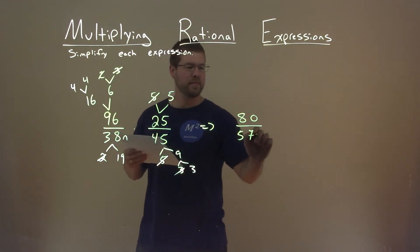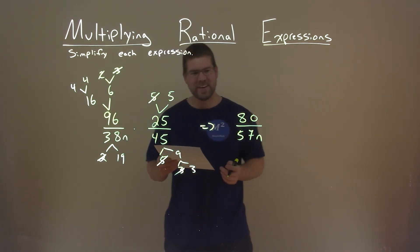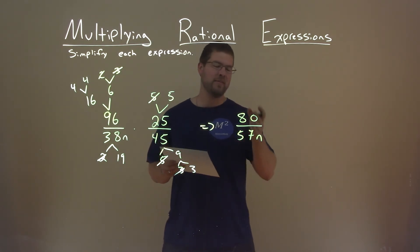Don't forget that n. And there we have our final answer. 80 divided by 57n.